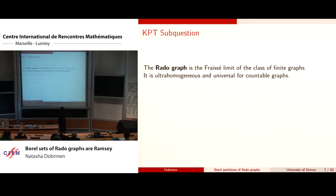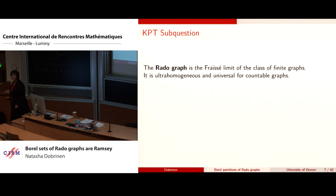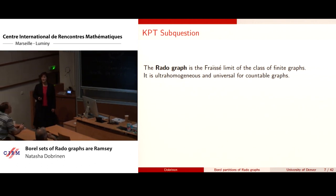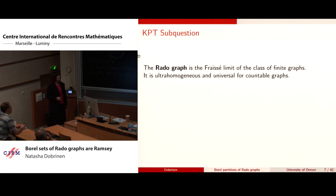The Rado graph, to remind you, is the Fraïssé limit of the class of all finite graphs. It is the ultra-homogeneous graph which is universal for countable graphs. Ultra-homogeneous means that when you have two finite graphs and an isomorphism between them inside the Rado graph, you can extend that to an automorphism of the whole Rado graph. Universal means every countable graph embeds into it as an induced subgraph.